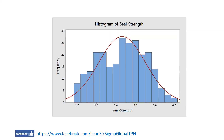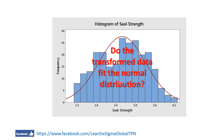Look at this histogram of the transformed data. The transformed data seems to fit the normal distribution. This histogram is bell-shaped and approximately symmetric about the mean, which is characteristic of the normal distribution.